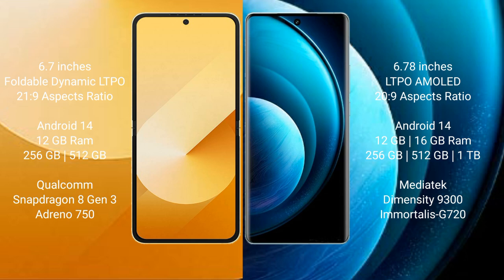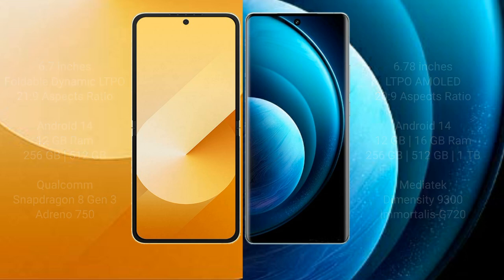Samsung Galaxy Z Flip 6 comes with 12GB RAM and 256GB or 512GB internal storage, with a Qualcomm Snapdragon 8 Gen 3 processor and Adreno 750 GPU. Vivo X100 Pro comes with 12GB or 16GB RAM and 256GB, 512GB, or 1TB internal storage, with a MediaTek Dimensity 9300 processor and GPU G720.